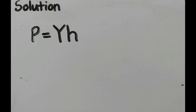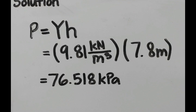We have an equation: p equals the unit weight times the height. How did we come up with this equation? Remember that to find pressure, you only need to multiply the unit weight by the given height in the problem. Let's substitute and multiply, cancel some units, and we have our answer of 76.518 kilopascals.